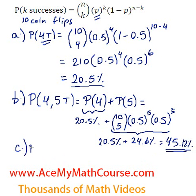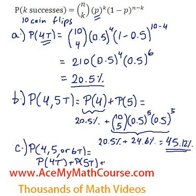And finally, question c, what is the probability of obtaining 4, 5, or 6 tails after flipping the coin 10 times? So we already have P4 and P5, 4 tails and 5 tails. This is just going to be the probability of getting 4 tails plus the probability of getting 5 tails and finally the probability of getting 6 tails. This is the only one that we really don't know. So let's calculate that.